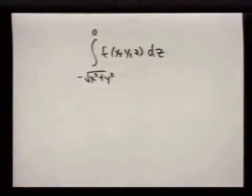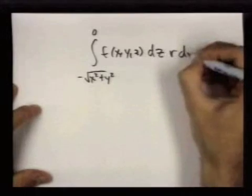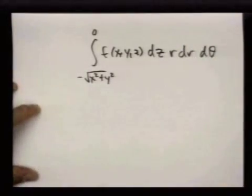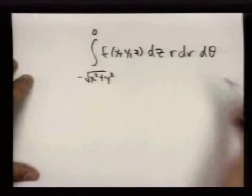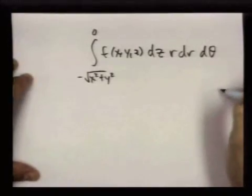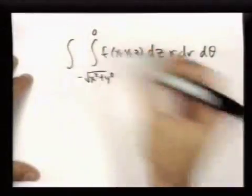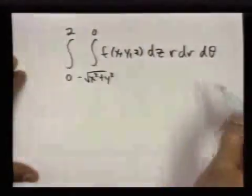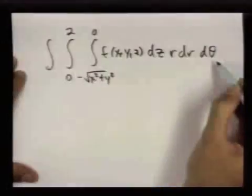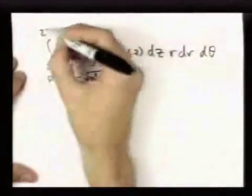But now we want to think of x and y now in terms of polar coordinates. So I'll have r dr dθ, and everything is stuck inside the cylinder of radius 2. So r is going from 0 to 2, and θ is going all the way around 0 to 2π.